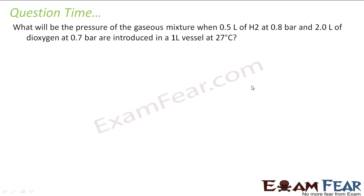The question says what will be the pressure of a gaseous mixture when 0.5 liter of hydrogen at 0.8 bar pressure and 2 liter of oxygen at 0.7 bar pressure is introduced in a vessel, 1 liter. So, I have 1 liter of vessel.